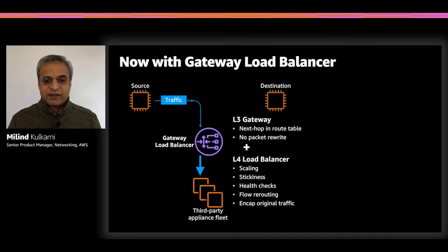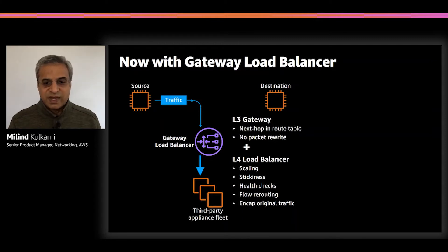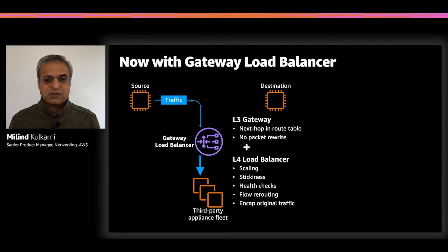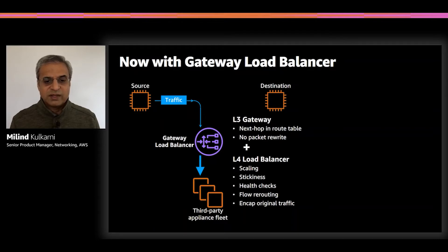Layer four load balancer characteristics also bring health checks, so the Gateway Load Balancer can make periodic health checks on appliances. If one of the appliances goes down, it will start rerouting the flows. When it does that, it encapsulates original traffic in a layer three header using a protocol called Geneve — an IETF protocol. So the layer three packet is seen by the appliances as-is.